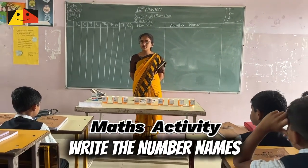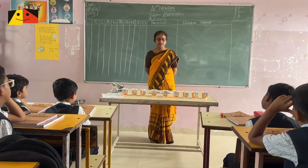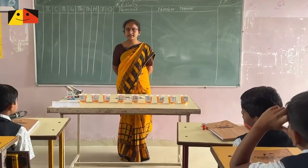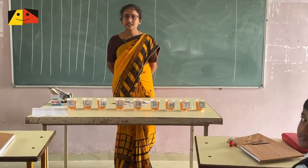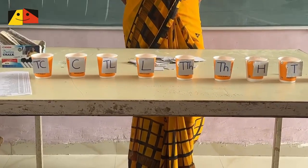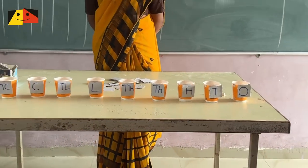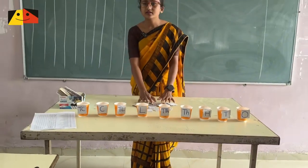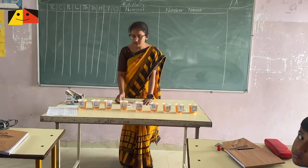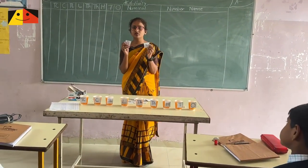What you people have to do in this activity: we have nine glasses which are labeled with their place value symbols. And here some cards are kept which are labeled with numbers 1, 2, 3, 4 and so on.